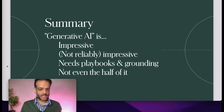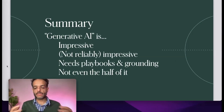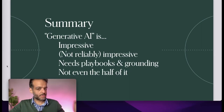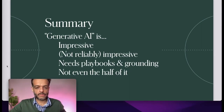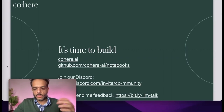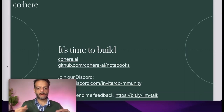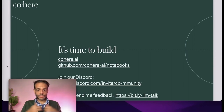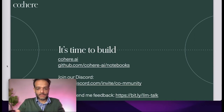This was a quick look at generative AI: what it is, how it's impressive, and how it's not yet reliably impressive. We need to develop playbooks and ground these models for better results. The term 'generative AI' doesn't even capture everything exciting about the world of AI. Thank you so much for listening — you can find Cohere at cohere.ai. We welcome you to join our Discord community for discussions about NLP, and we're always excited to work with people building the next generation of language understanding and generation systems.